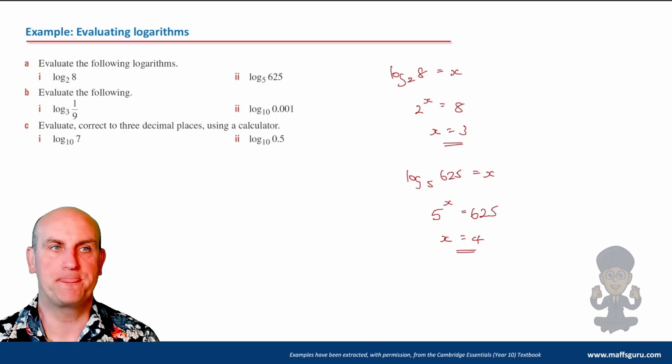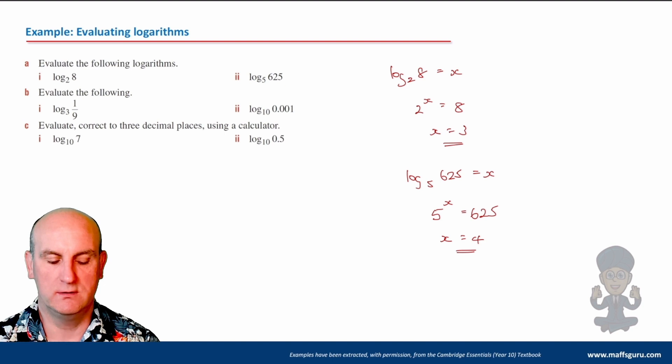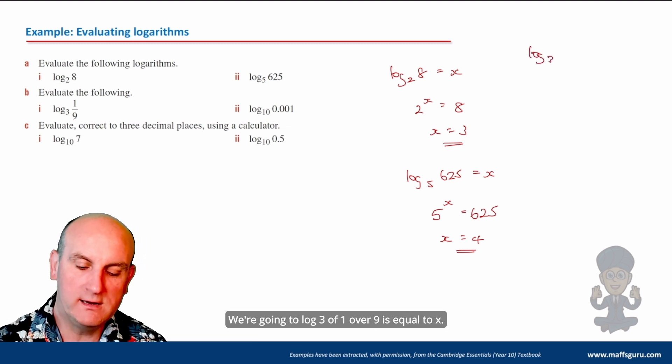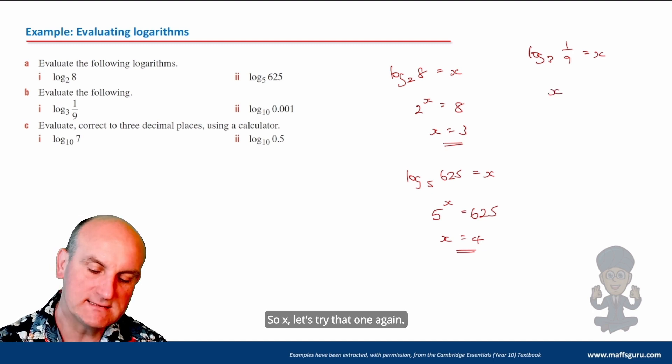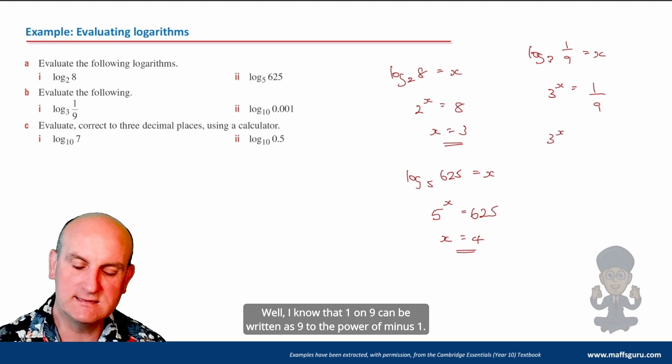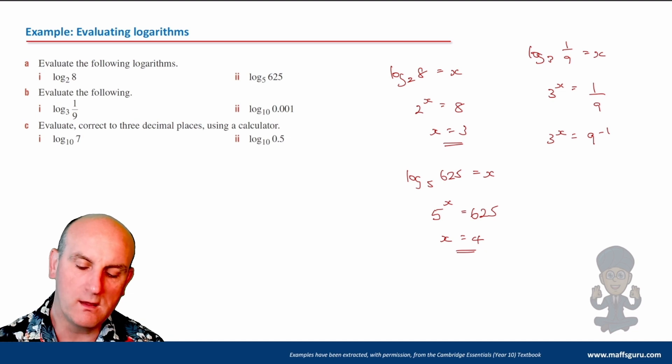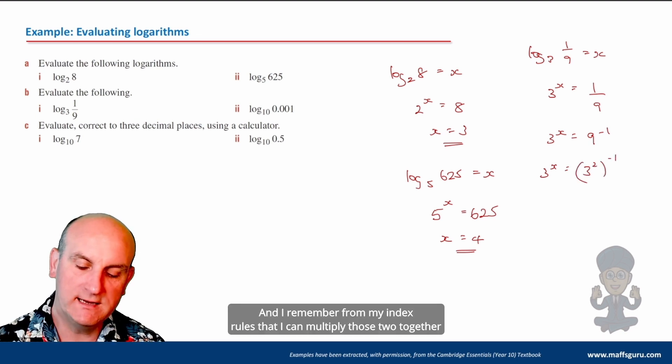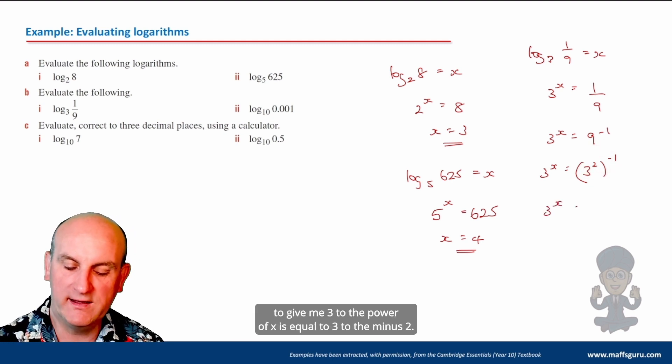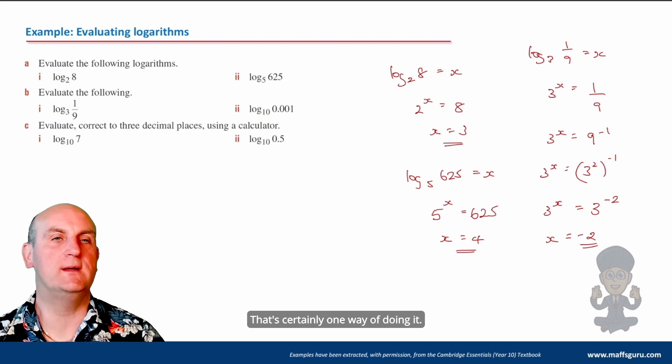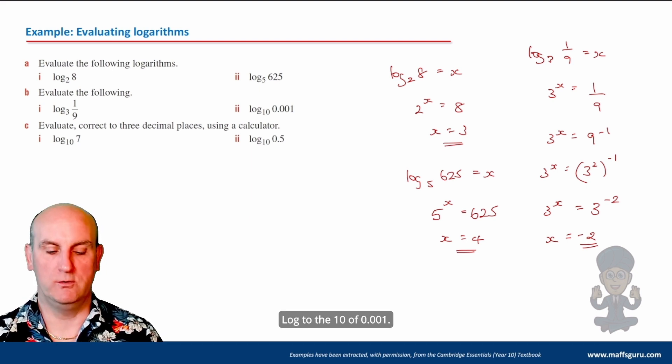Evaluate the following. Log 3 of 1 ninth. So let's write that out again. We're going to log 3 of 1 over 9 is equal to x. So 3 to the power of x is 1 on 9. Well, I know that 1 on 9 can be written as 9 to the power of minus 1. 9 can be written as 3 squared to the minus 1. And I remember from my index rules that I can multiply those two together to give me 3 to the power of x is equal 3 to the minus 2. So in which case x there is minus 2.